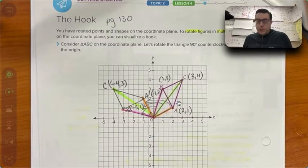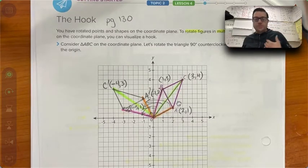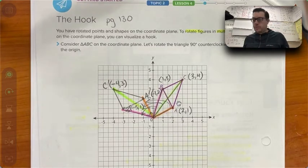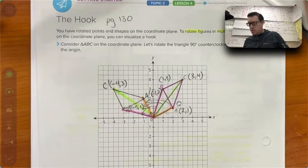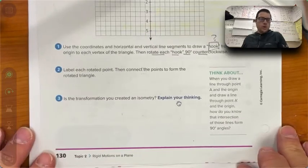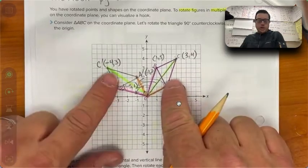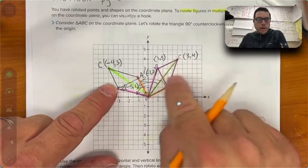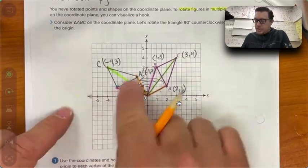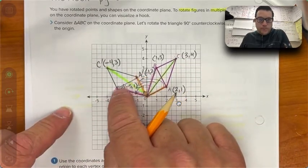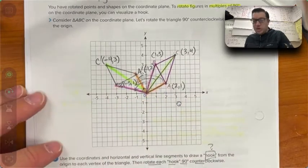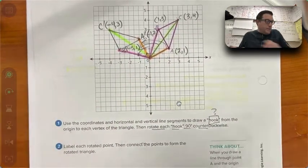We're finishing page 130 and moving on to activity one. This video is centered around activity one and it's a long video. In this picture, the size of triangle ABC and the size of triangle A prime B prime C prime are actually the exact same.